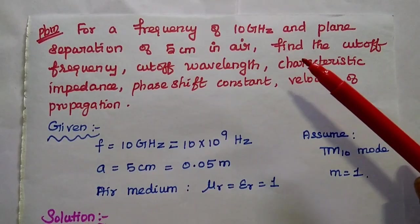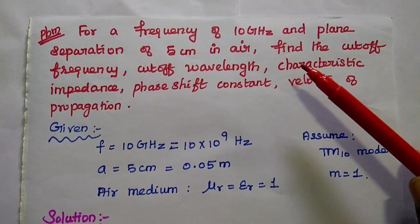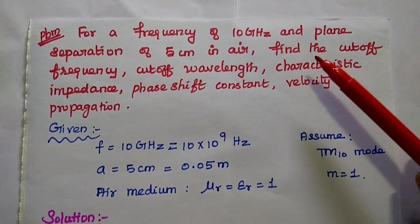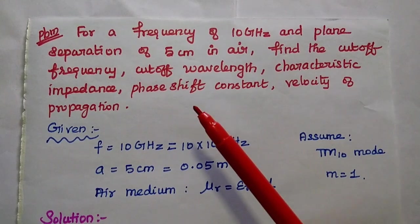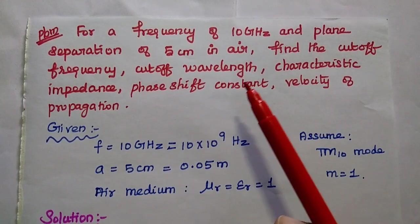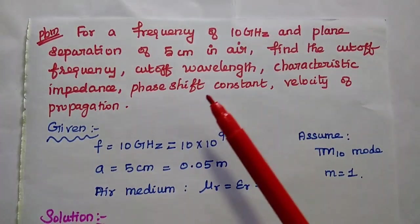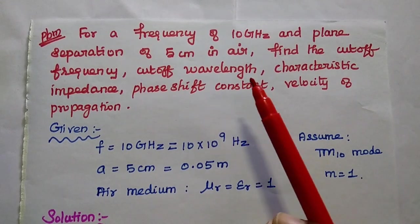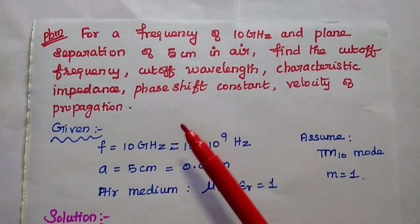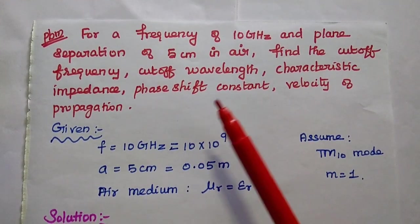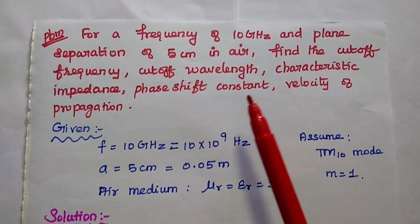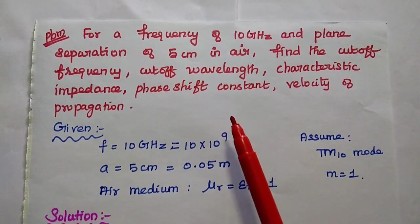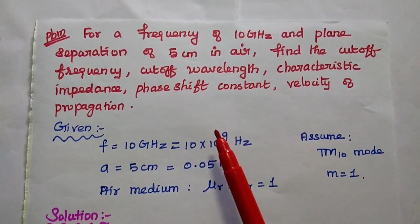Now we are going to solve an important problem in parallel plane wave propagation. For a frequency of 10 gigahertz and a plane separation of 5 centimeter in air, find the cutoff frequency, cutoff wavelength, characteristics impedance, phase shift constant, and velocity of propagation.